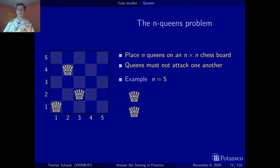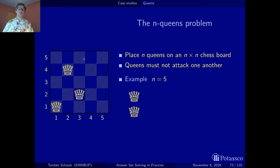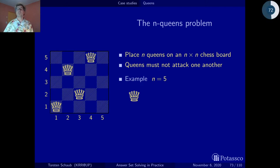Now there are two possibilities for the fourth queen. This one doesn't work — diagonal attack. But we can put it here, because there's no queen in this line, no queen in the row by construction since we proceed row-wise, and no diagonal attack. So let's put the queen there. Now there's only one line left without a queen, so this is the only remaining position.